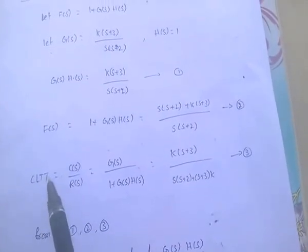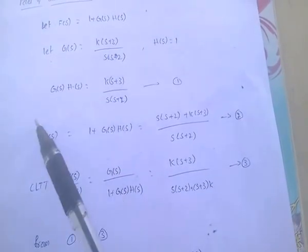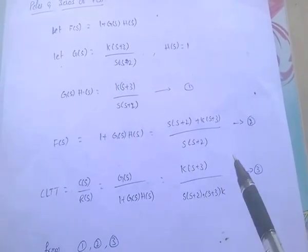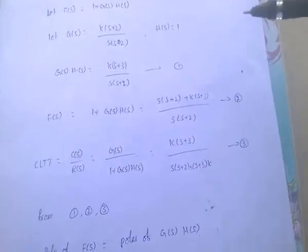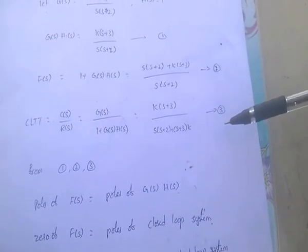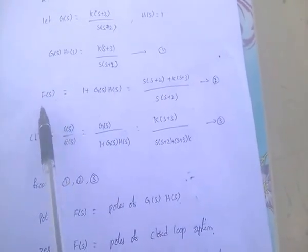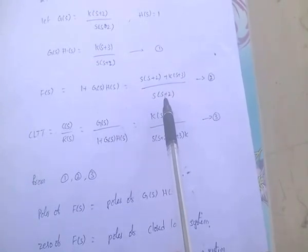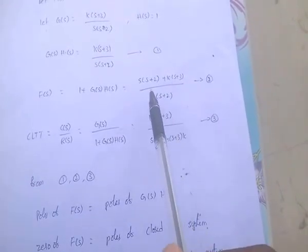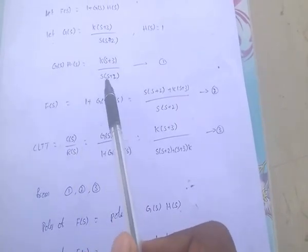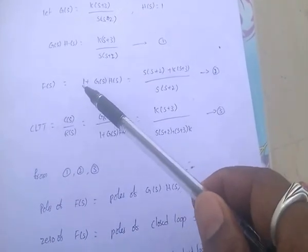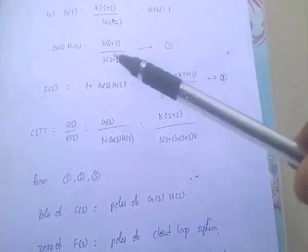The closed loop transfer function is G(S) / [1 + G(S)·H(S)]. The poles of F(S) come from the denominator S(S+2), giving poles at S=0 and S=-2 — two poles total. The poles of F(S) equal the poles of G(S)·H(S). These two poles are at 0 and -2.